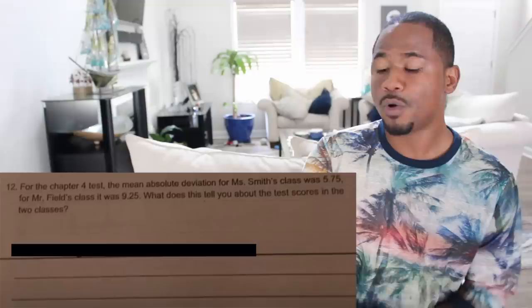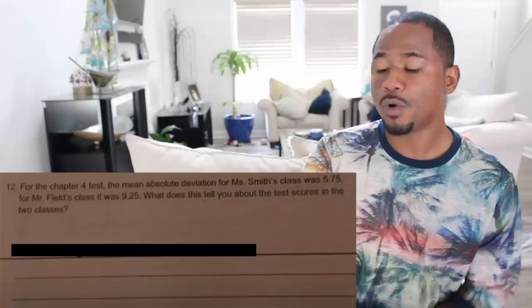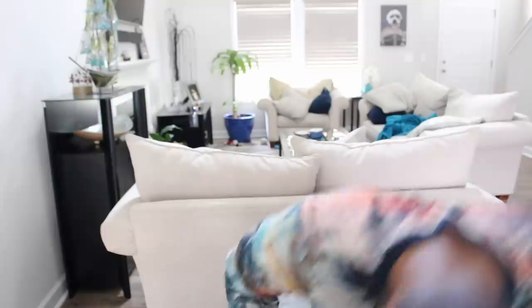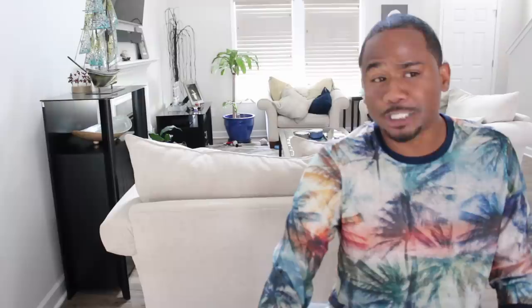Question 12: the mean absolute deviation for Mrs. Smith's class was 5.75, for Mr. Phil's class it was 9.25. What does this tell you about the test scores in the two classes? Someone wrote: 'Mrs. Smith got some dumb— children.' Well, maybe Mrs. Smith's teaching ability isn't up to par with Mr. Phil's.